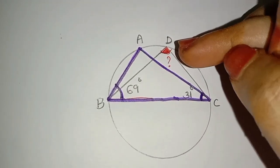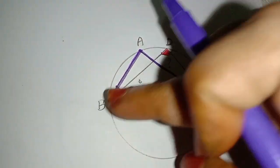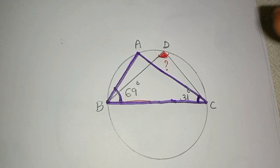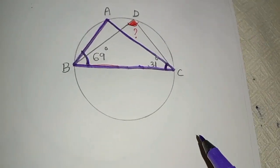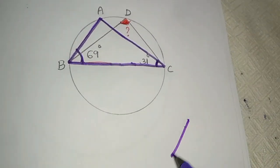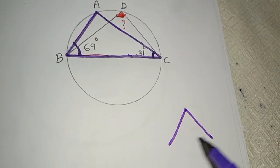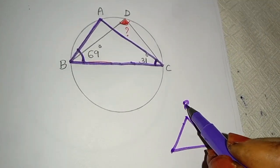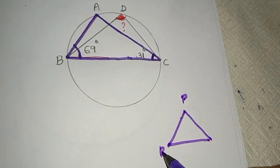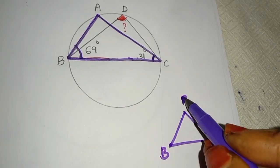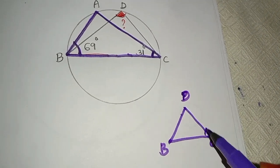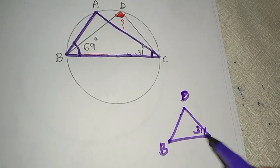Now, we can work with triangle BDC. We can use the value of 31 degrees in this triangle BDC.